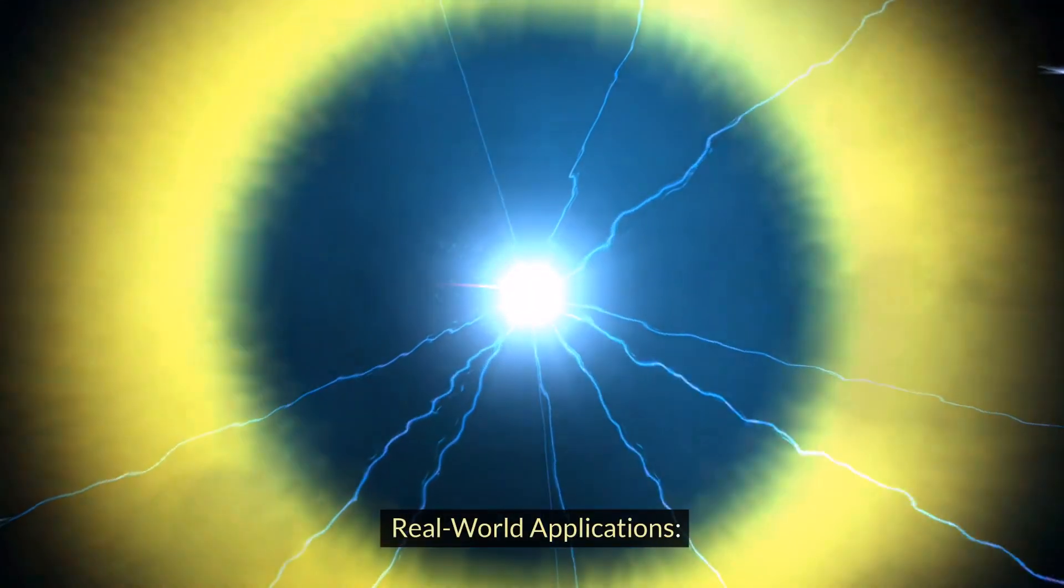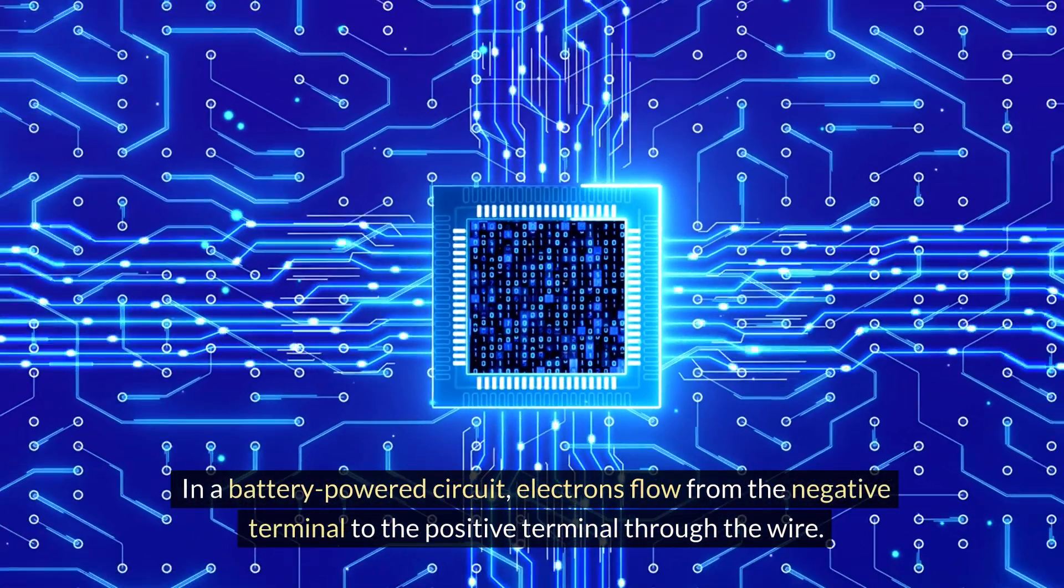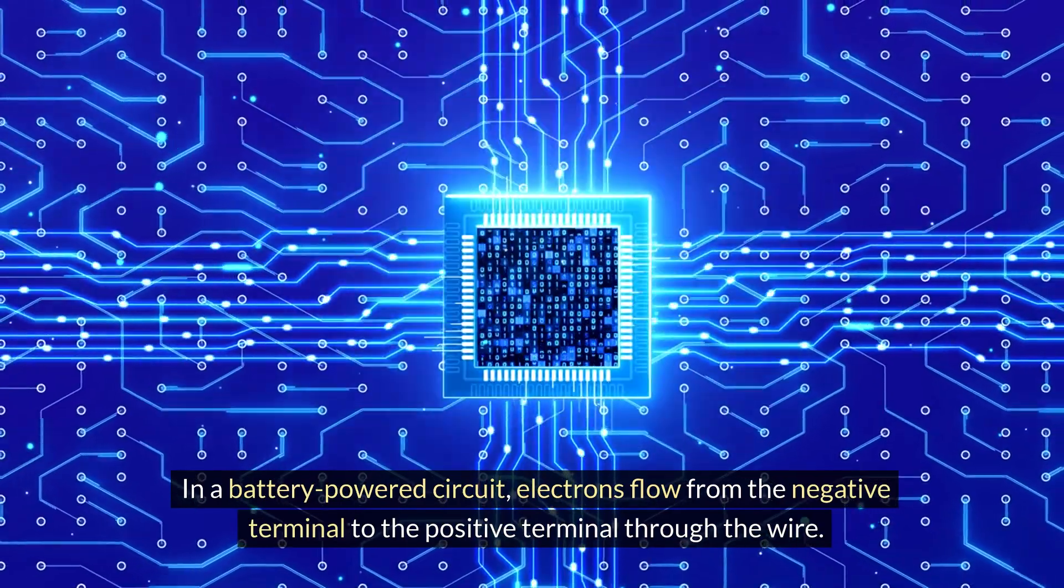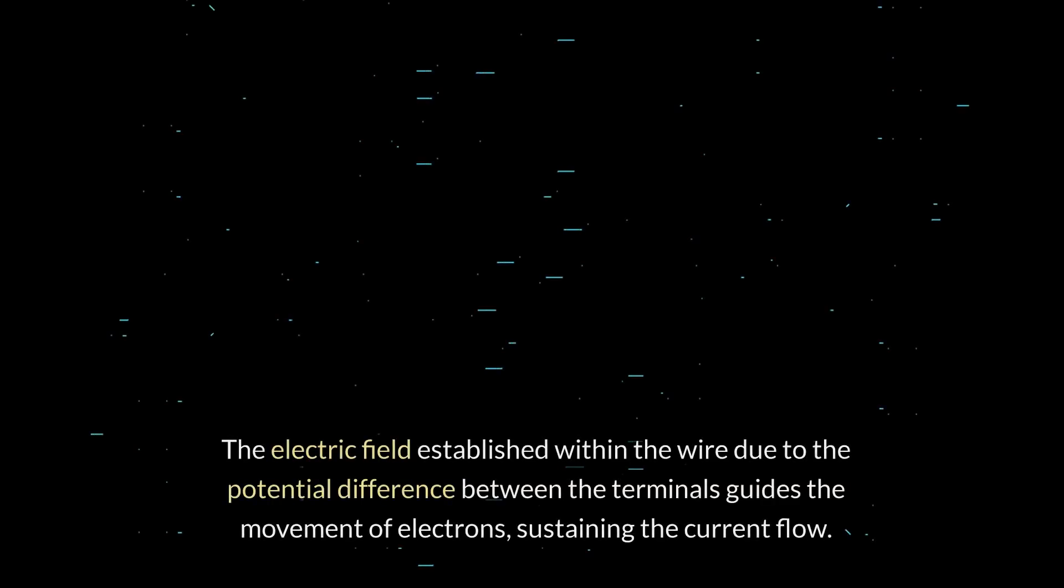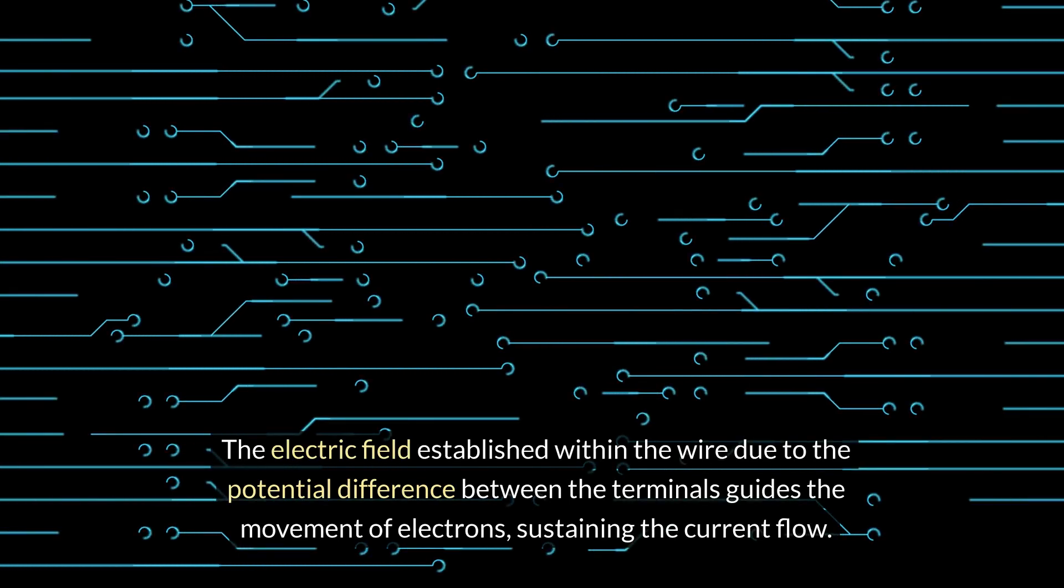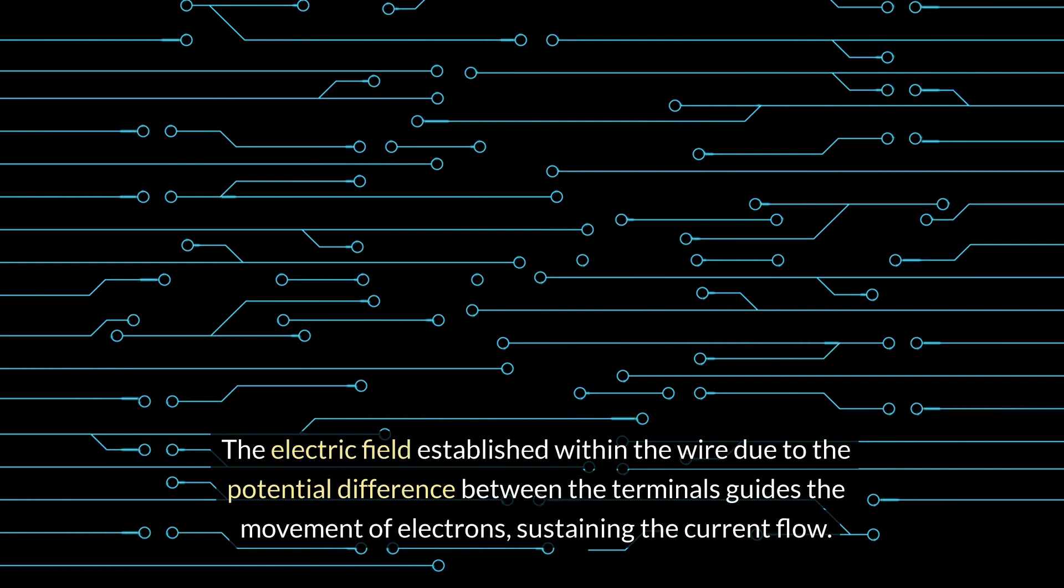Real-world applications. Electric current in wires: In a battery-powered circuit, electrons flow from the negative terminal to the positive terminal through the wire. The electric field established within the wire due to the potential difference between the terminals guides the movement of electrons, sustaining the current flow.